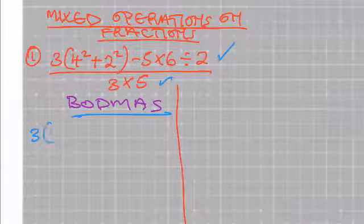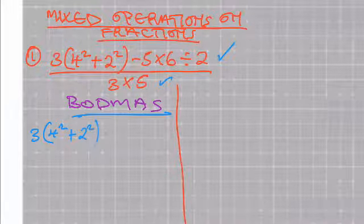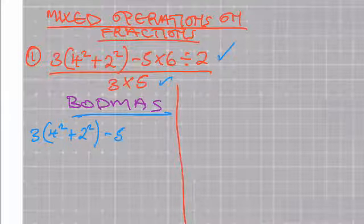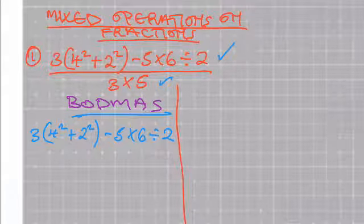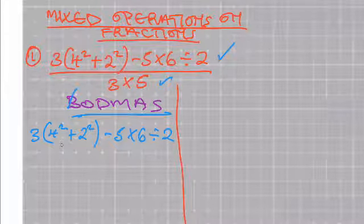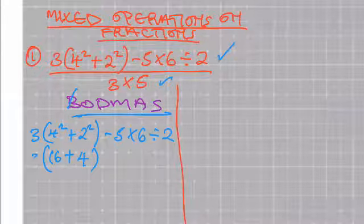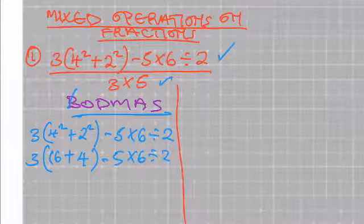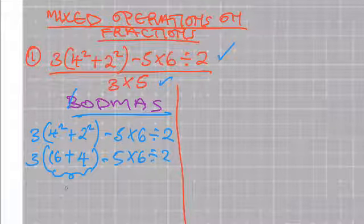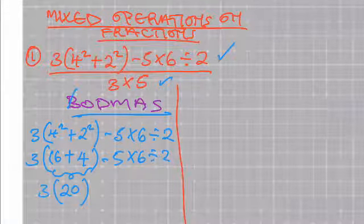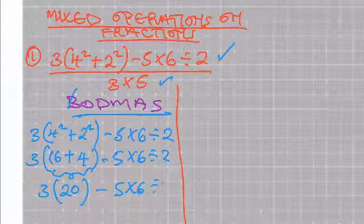The numerator is 3 into the square of 4 plus the square of 2 minus 5 multiplied by 6 divided by 2. We begin by what is within the bracket, because bracket comes first — that is the square of 4 plus the square of 2. Square of 4 is 16, plus the square of 2 is 4. To finish up with the bracket: 16 plus 4 is 20, multiplied by 3, minus 5 multiplied by 6 divided by 2.